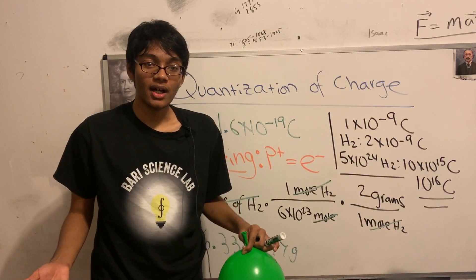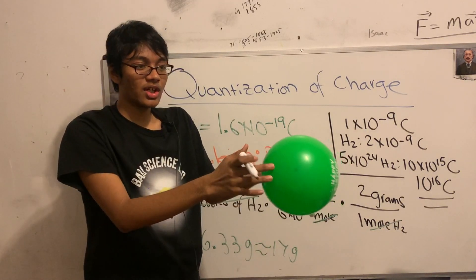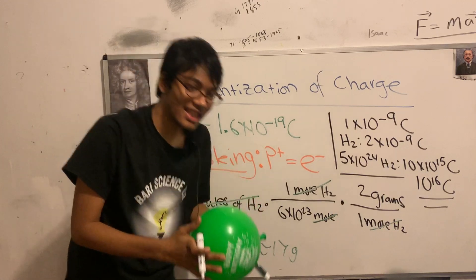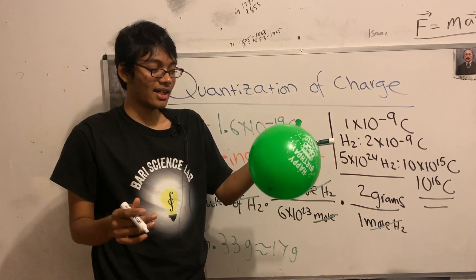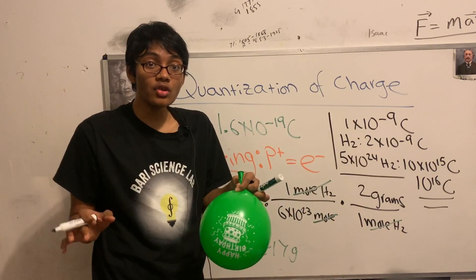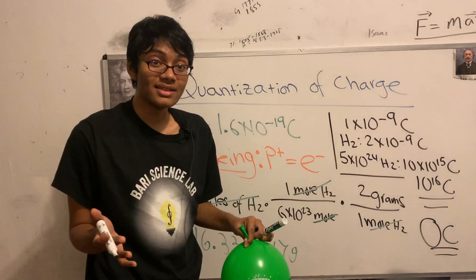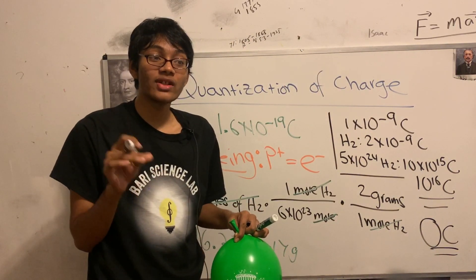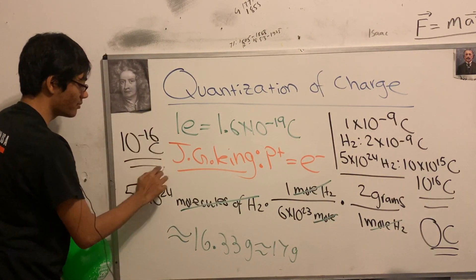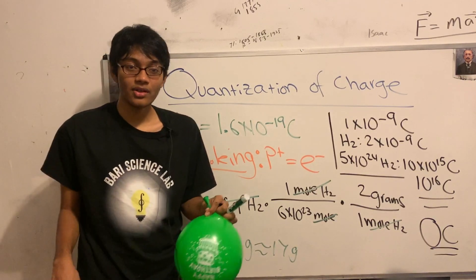How can you measure the amount of charge on this balloon? We can use an electroscope — put the balloon near the electroscope and see if the leaves move. When J.J. King did that, he saw that the leaves did not move. That means the balloon had zero net charge, meaning the proton and electron do not have a difference in charge by one in a billion. Today that has been experimentally verified up to 10 to the minus 16 coulombs, so we know almost for a fact that the proton and electron have the same amount of charge.